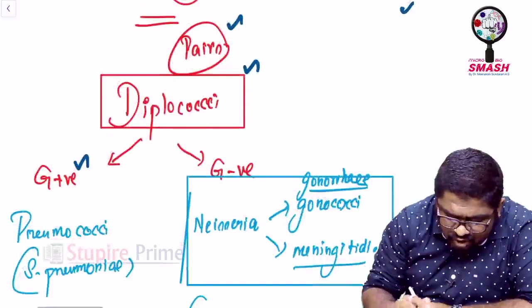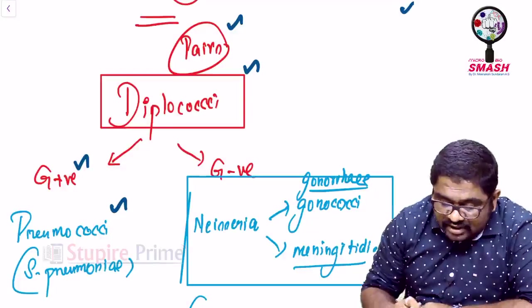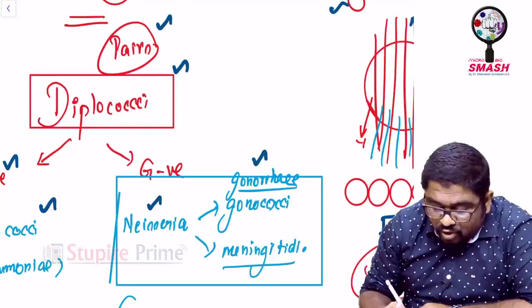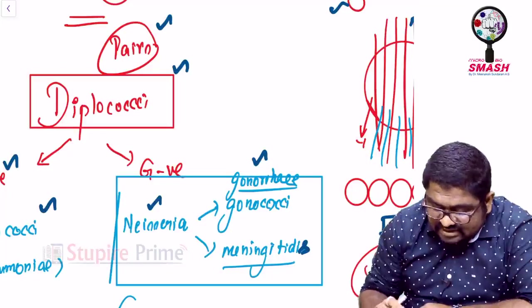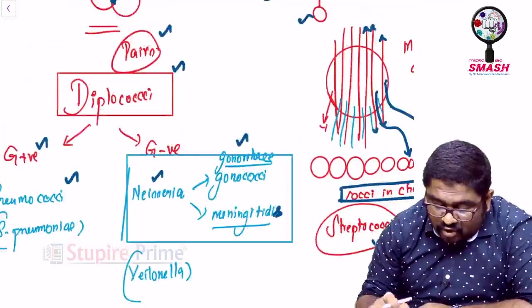Now, what are the best examples of diplococci? Among gram-positive diplococci, you have pneumococcus, which I just said, it is streptococcus pneumoniae. In case of gram-negative, I have Neisseria group of organisms, example, gonococci or gonorrhoeae and meningitidis. These two organisms are gram-negative diplococci.